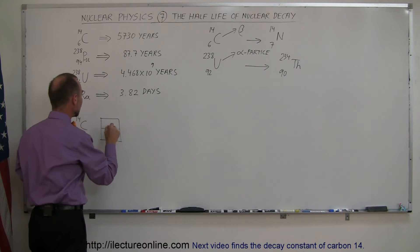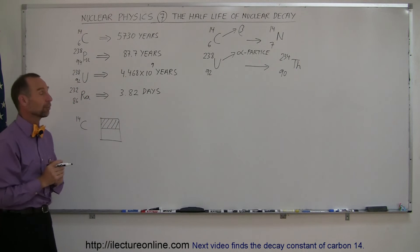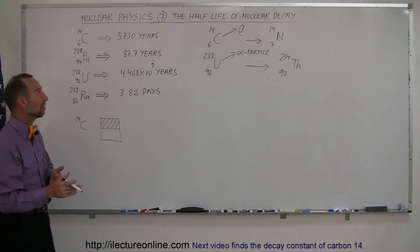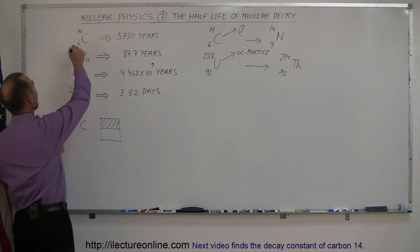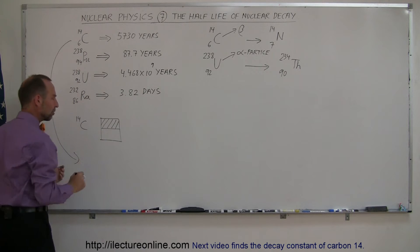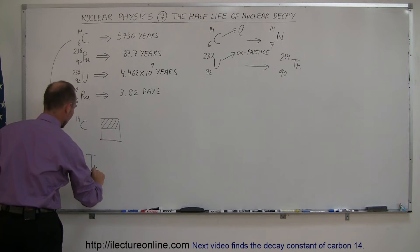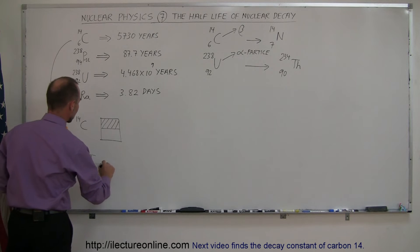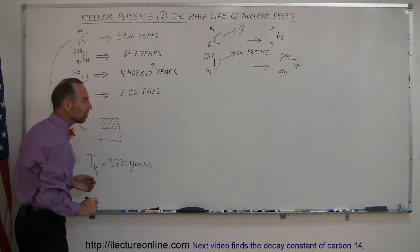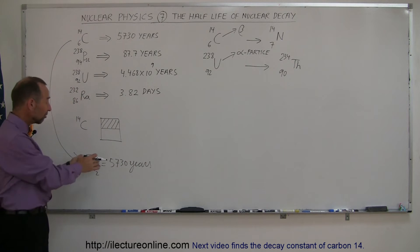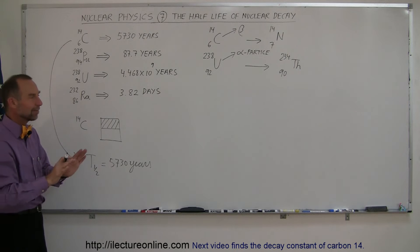Then half of the carbon-14 will have decayed, and the other half will still be radioactive carbon-14. So that's what the half-life means. So in the case of carbon-14, the half-life, one way to denote the half-life is a T with a one-half, with a sub one-half like that, for carbon-14 is equal to 5730 years. Now the misconception is that means after twice as long, then all of it will be gone, but that's not the case.